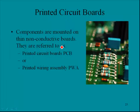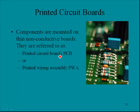The next item is printed circuit boards. Here we have a printed circuit board on the right side of the screen. These components are mounted on thin, non-conductive boards. Printed circuit boards have two common names: printed circuit boards, with the acronym PCB, or printed wiring assemblies, abbreviated PWA.